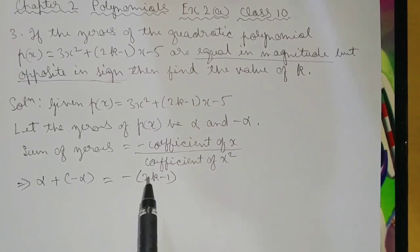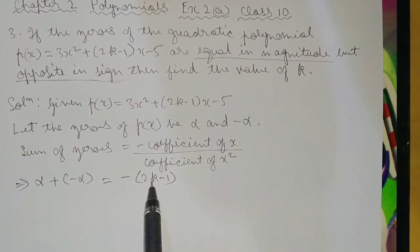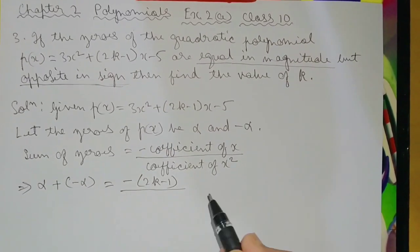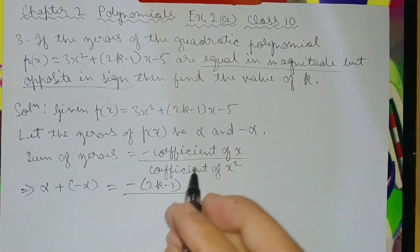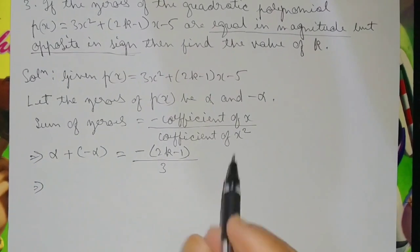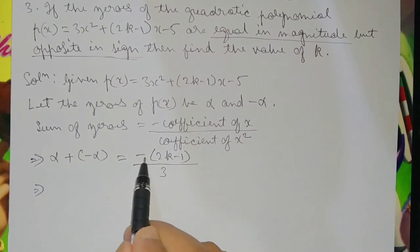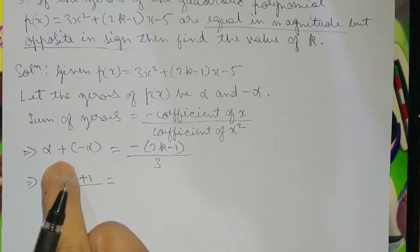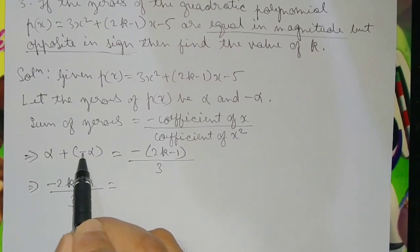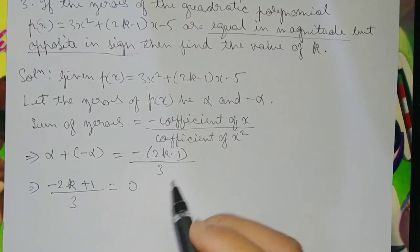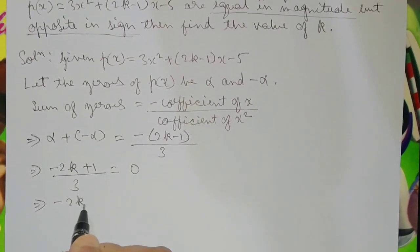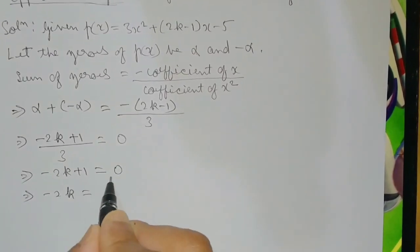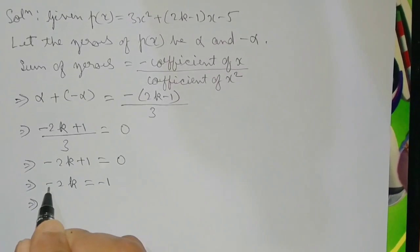Separating the terms in the bracket: alpha plus minus alpha equals minus 2k plus 1, all divided by 3. The left side alpha plus minus alpha equals 0. So 0 equals minus 2k plus 1 divided by 3. Cross multiplying: 3 into 0 = 0, so minus 2k plus 1 equals 0, giving minus 2k equals minus 1.